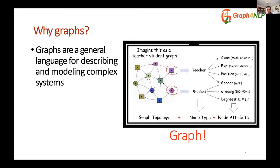As a concrete example, consider a teacher-student graph in an AI for education domain. Each teacher node can have attributes such as what class they teach, whether they are junior or senior, their position at the university, and gender. When we talk about deep learning on graph, we're talking about algorithms that take graph topology along with node types, node attributes, edge types, and edge attributes as input — depending on how you formulate your problem.